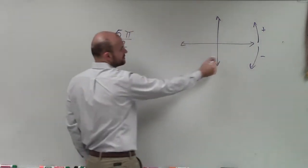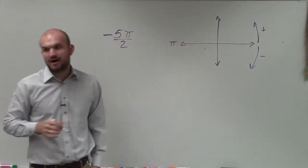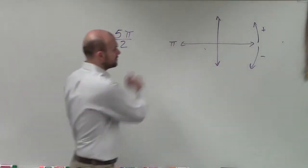remember, when we're dealing with radians, a distance of halfway around the circle, we represent as π, right? And then all the way would be 2π.